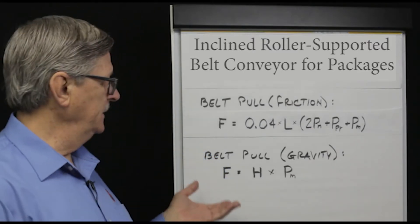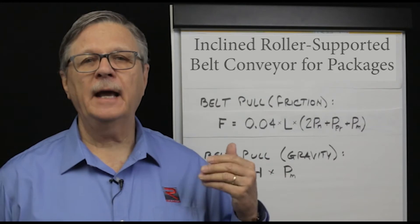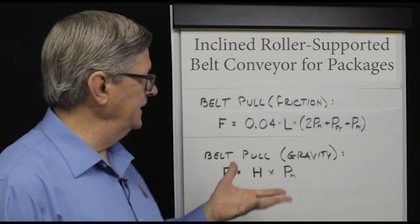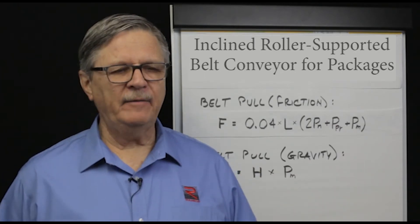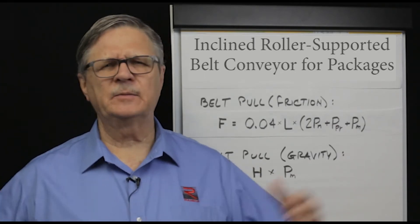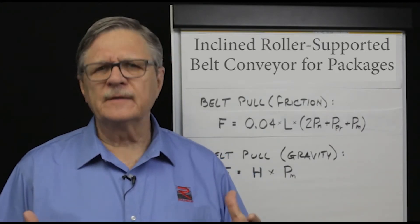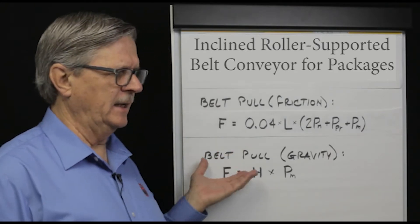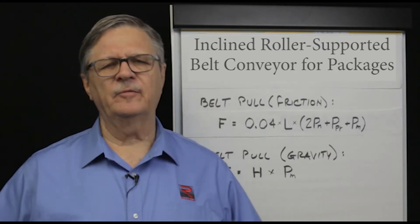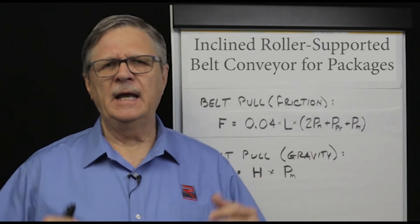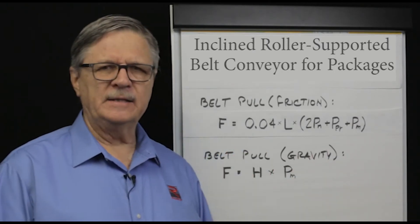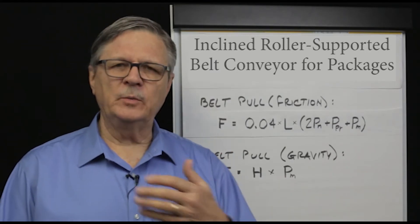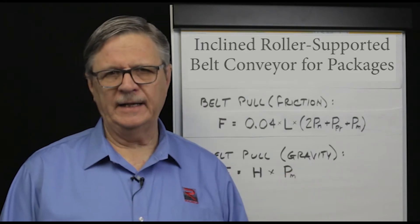As I said in the segment on how to calculate belt pull for roller supported horizontal conveyors, this is intended to be an average conveyor. If your roller conveyor is extremely wide or the rollers are particularly thick-walled, then these assumptions would not be valid. However, for an average conveyor of average width and normal roller size, these equations are quite handy and the parameters apply to a wide variety of applications.